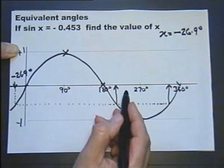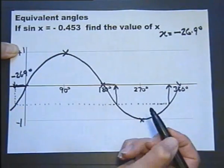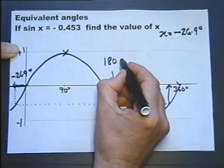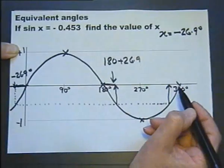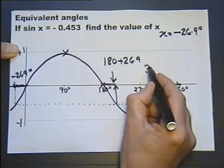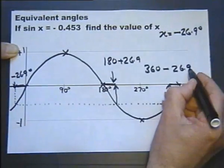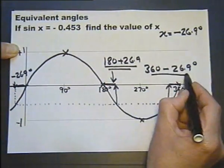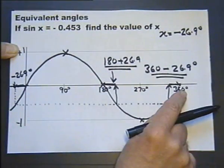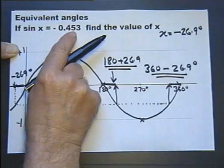Looking at the symmetry of the graph, this is 26.9 degrees, so this must also be 26.9 degrees. Therefore this angle we're looking for is 180 plus 26.9 degrees, and this is the same as this, so the other angle is 360 minus 26.9 degrees. Working out these two answers will give me two answers in the range of 0 to 360 degrees, where the sine of those two angles when I work them out is minus 0.453.